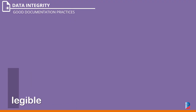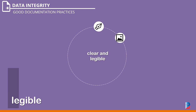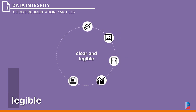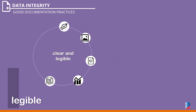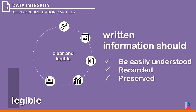Legible: written or recorded data should be clear to all users — handwritten documents, images, scripts, graphs, and electronic formats. To simplify, we have to understand: can the information be easily understood? Is it recorded permanently on a durable medium? Have original entries been preserved?